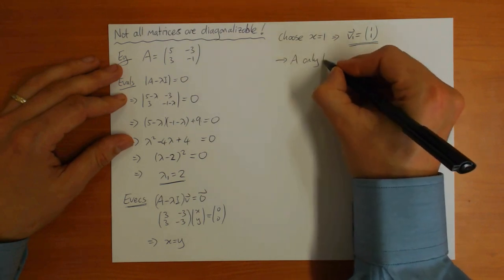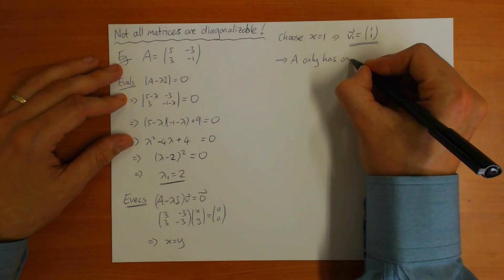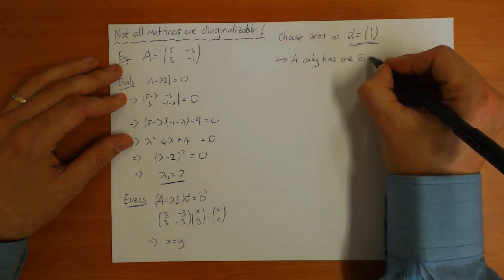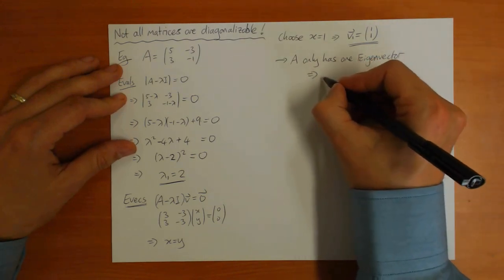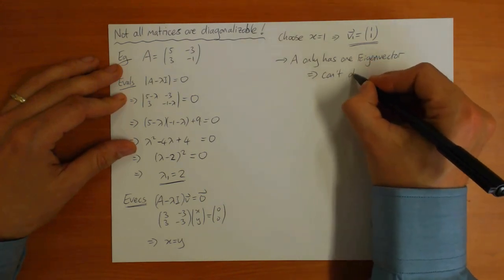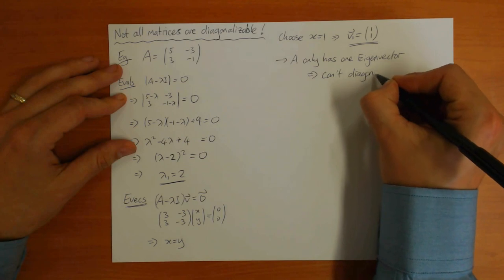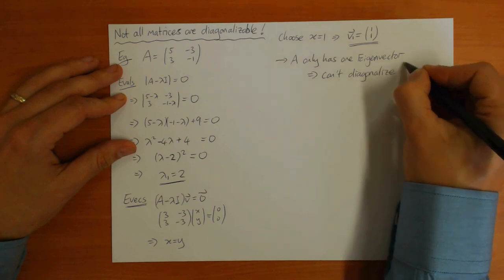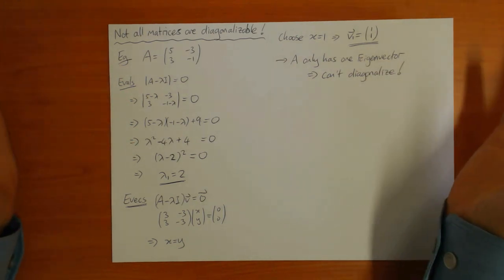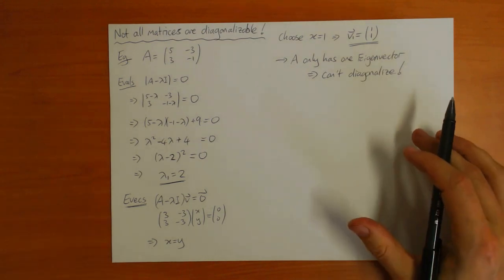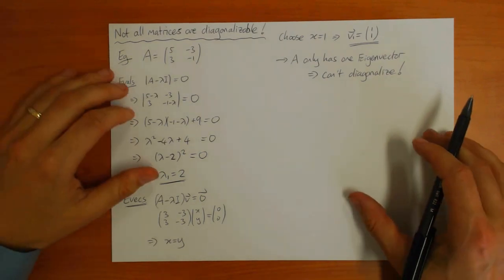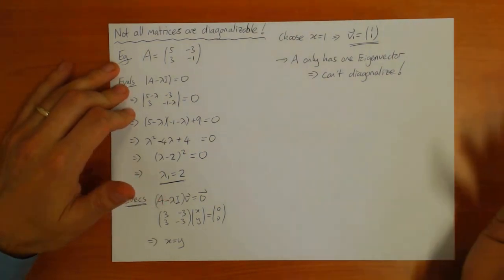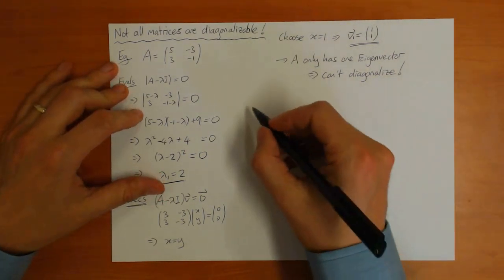In conclusion, A only has one eigenvector, and this is a big problem. This means that you can't diagonalize the matrix. In this case, you can't use those nice formulas I showed you to calculate the exponential or the log or whatever. So that's a shame, it doesn't work all the time.